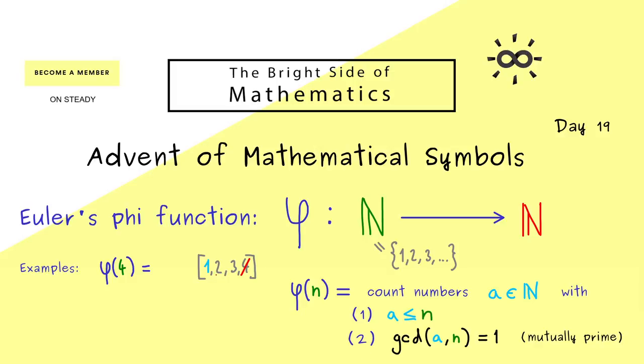Then in the next step we have to exclude 2 because 2 times 2 is 4. Looking at 3, we see there is no common divisor greater than 1. And now you see when we count the numbers that remain that fulfill both properties, we get 2. Hence φ(4) is 2.